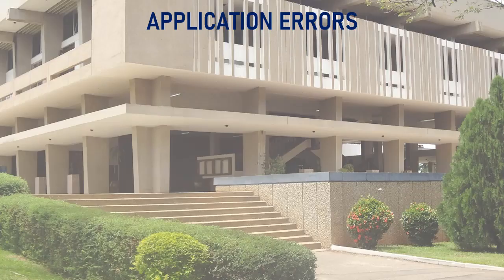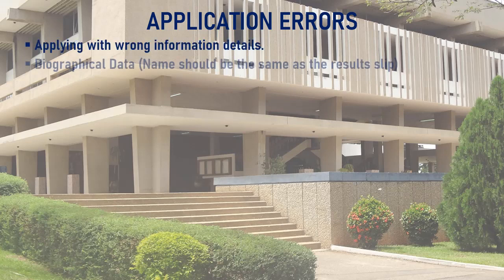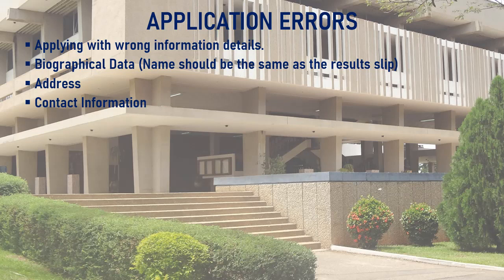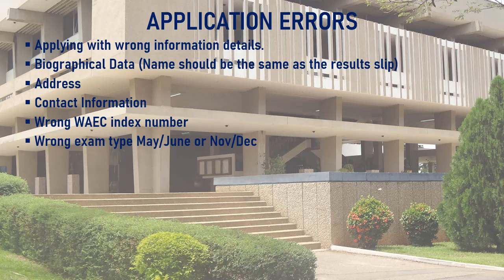Applicants must take note of these common application errors. Applying with the wrong information with regards to your biographical data — your name should be the same as on your WAEC results slip when applying on the university's online portal. Also provide an accurate address where you can be reached. Make sure to provide accurate and active contact details. Always cross-check and confirm your index number when applying, and make sure the correct examination sitting is indicated.